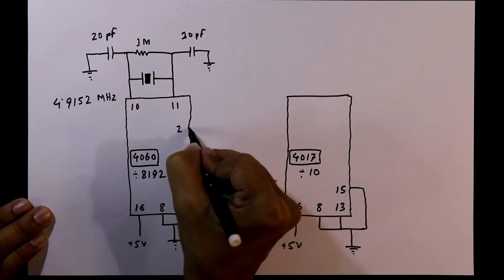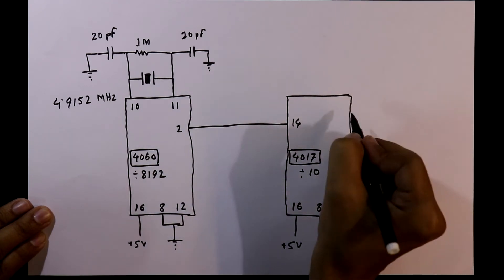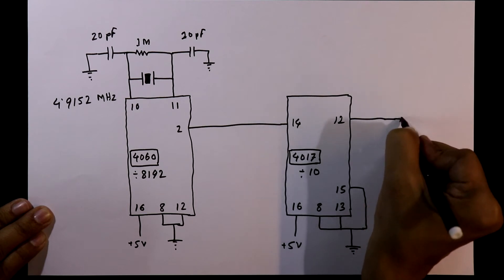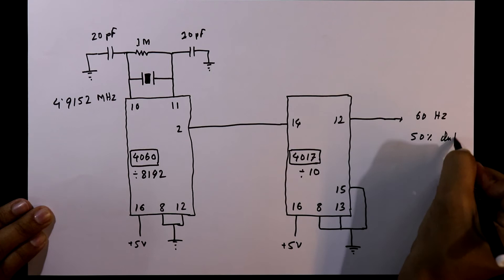Pin number 2 is connected to pin number 14 of this 4017, and we will take the output from pin number 12. From here we will get 60 Hertz of frequency with 50% duty cycle.